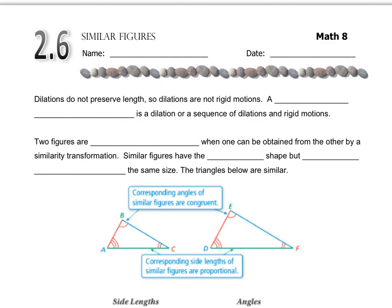A few lessons ago, we talked about rigid motions, and rigid motions preserve length. They keep size the same. Obviously, as we just looked at in the last lesson, dilations do not keep the same size, so therefore they're not rigid motions.